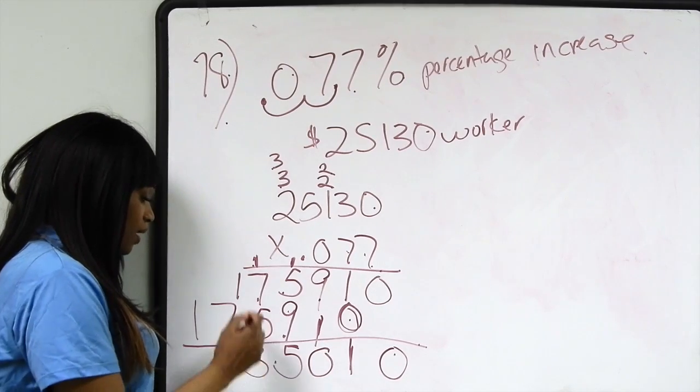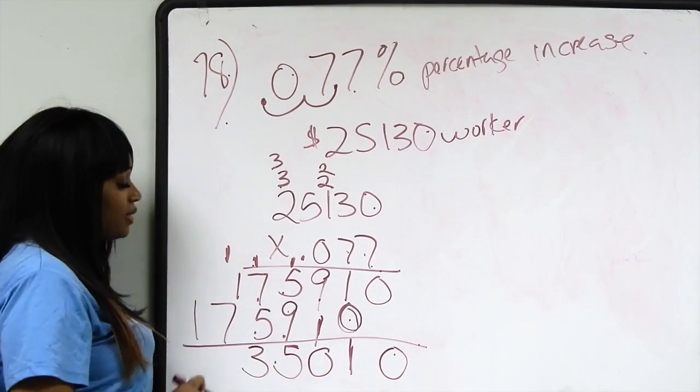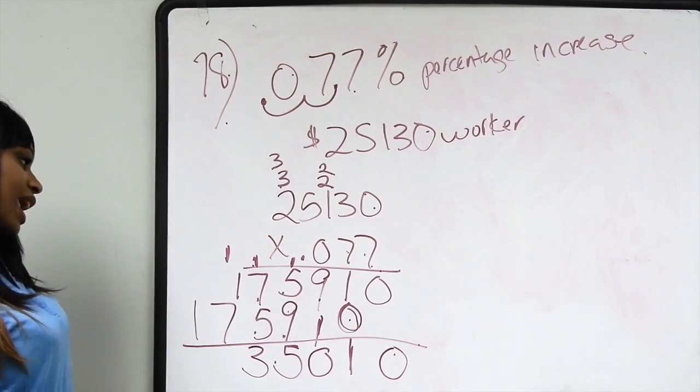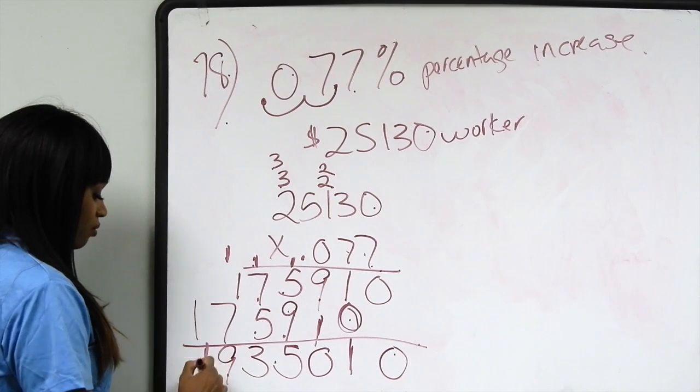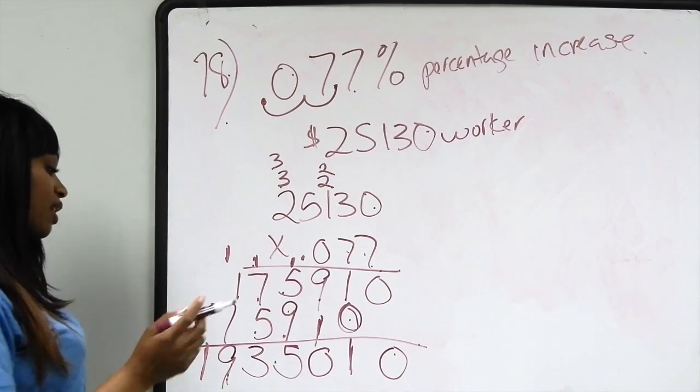7 plus 5 is going to give us 12, plus 1 more is going to be 13. Bring down the 3 and carry the 1 one place over to the left. 7 plus 1 is 8, plus 1 more is 9. And then 1, you just bring it down. Because 1 plus nothing is 1.